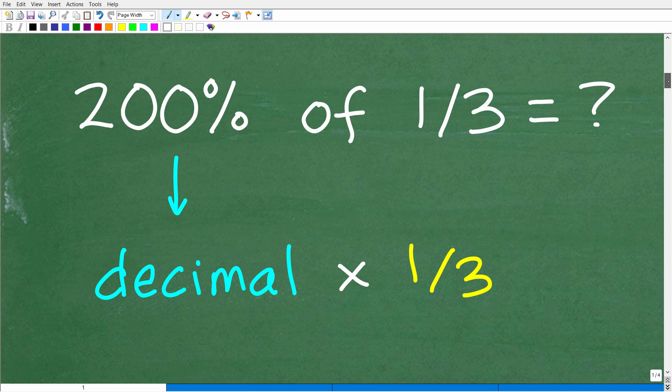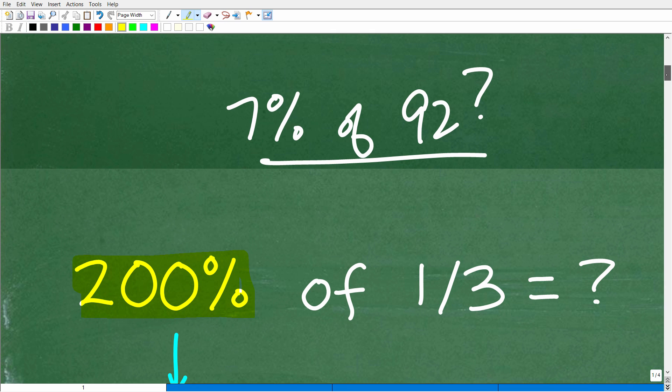Okay, so in this problem, we're going to have to change this 200% to a decimal, and then we're going to multiply the decimal equivalent of the percent times the number one-third. So in this particular example, we would need to change this 7% to the decimal equivalent, which, of course, is 0.07. And then we just multiply it by 92. And if we have our calculators, that is pretty easy to solve.